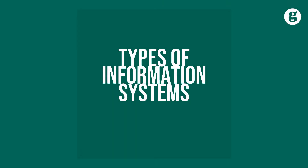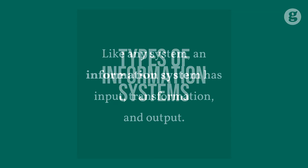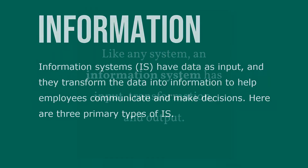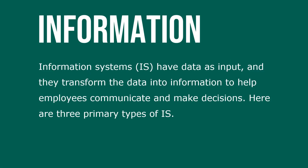Let's take a look at types of information systems. Like any system, an information system has input, transformation, and output. Information systems have data as input and they transform the data into information to help employees communicate and make decisions.